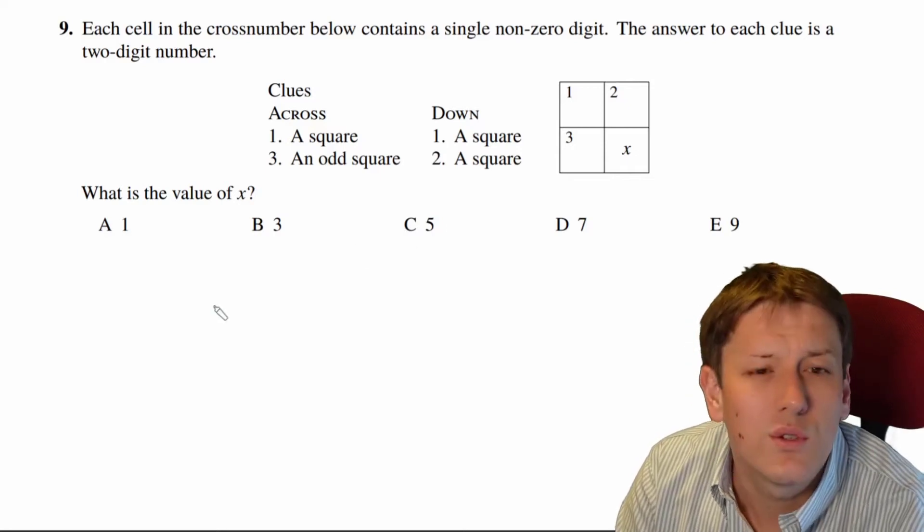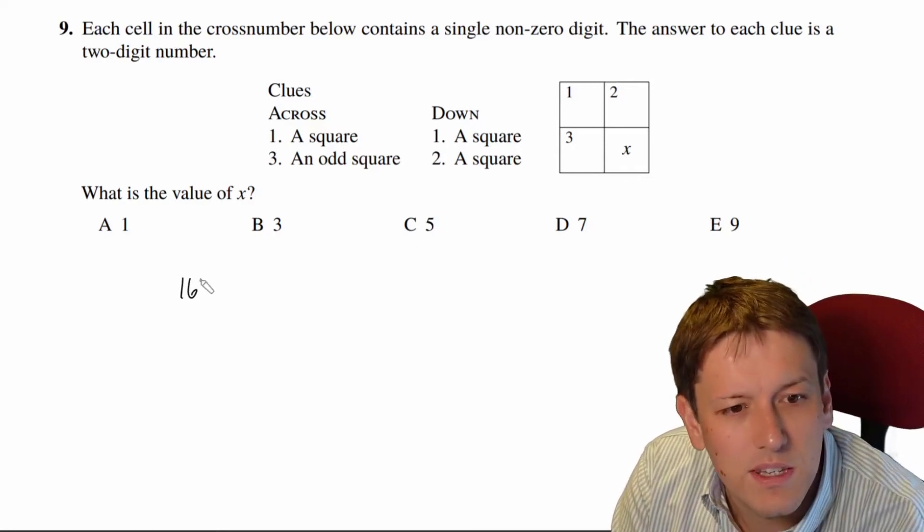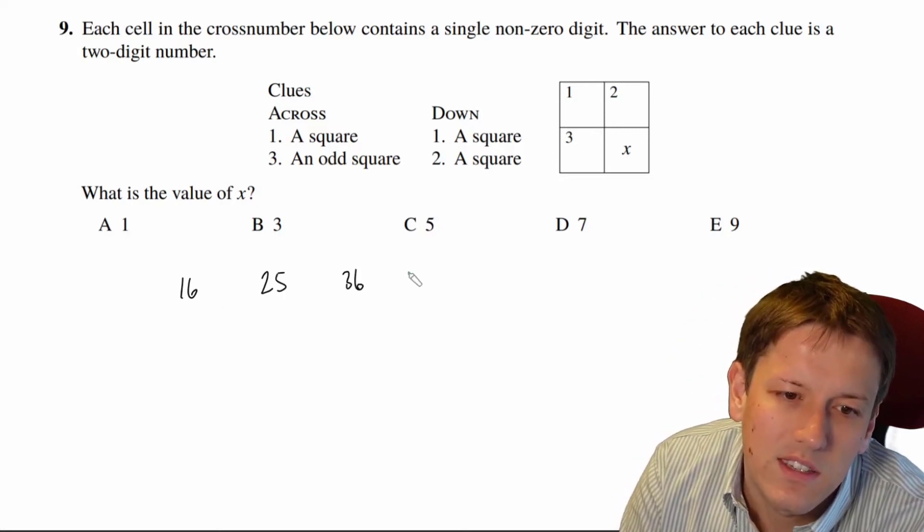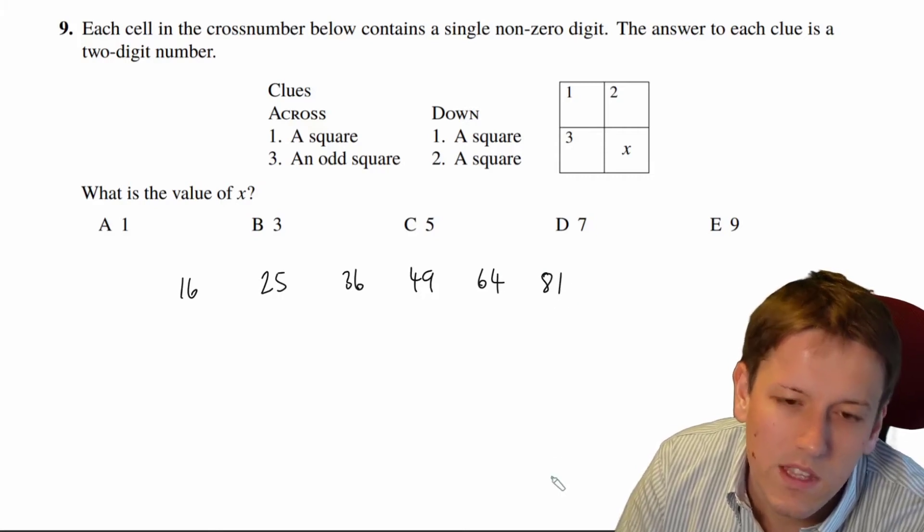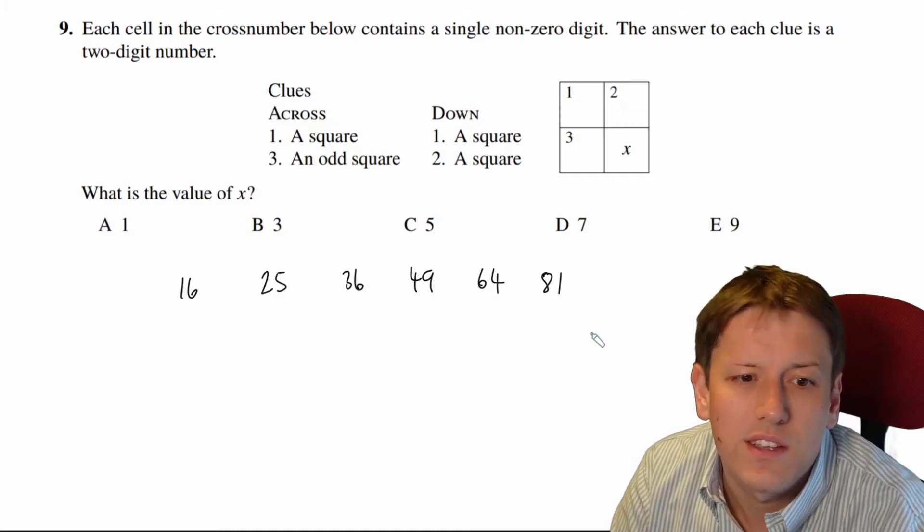Now the two-digit square numbers, what are they? Well, 3 squared is only 9, so the first one is going to be 16, which is 4 squared. 5 squared is 25, 6 squared is 36, 7 squared is 49, 8 squared is 64, 9 squared is 81, and then we'll be into three-digit squares. So this is all we've got to work with.